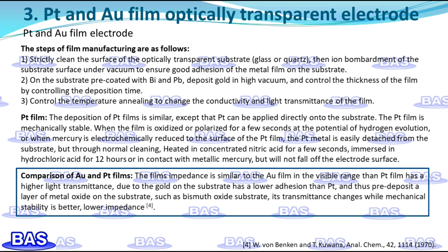Second, on the substrate pre-coated with bismuth and lead, deposit gold in high vacuum, and control the thickness of the film by controlling the deposition time. Third, control the temperature annealing to change the conductivity and light transmittance of the film. The deposition of platinum films is similar, except that platinum can be applied directly onto the substrate.